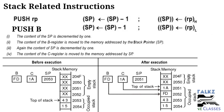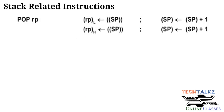The stack pointer becomes 2051. The content of the low-order register C is moved to memory address 2051. The content of the top of stack memory is moved to the register pair.